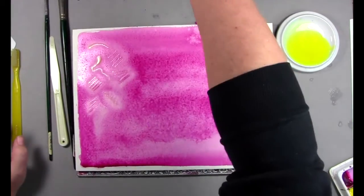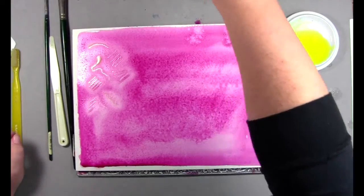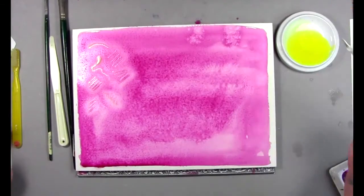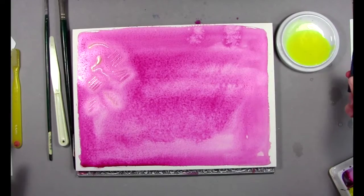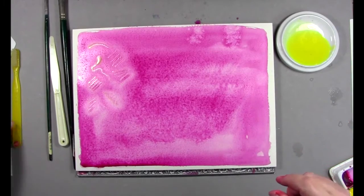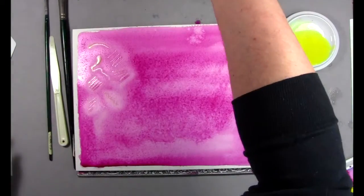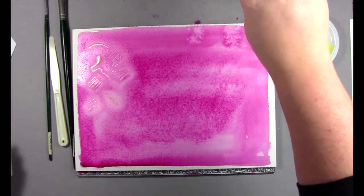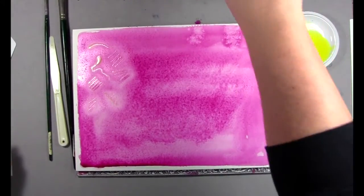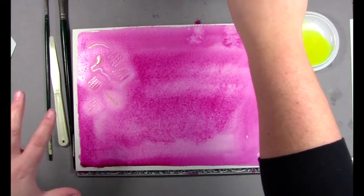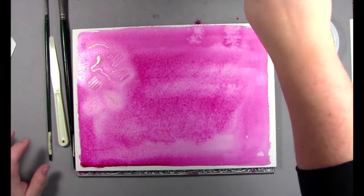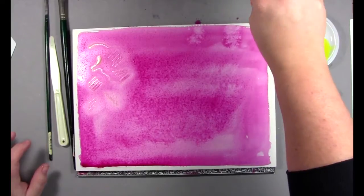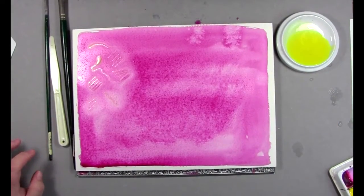Now, keep in mind, I don't know how archival this is gonna be. There are issues of longevity to using household items. Now, one way you can get around that though is by mounting your piece onto a wooden panel with gel medium and then varnishing over top.